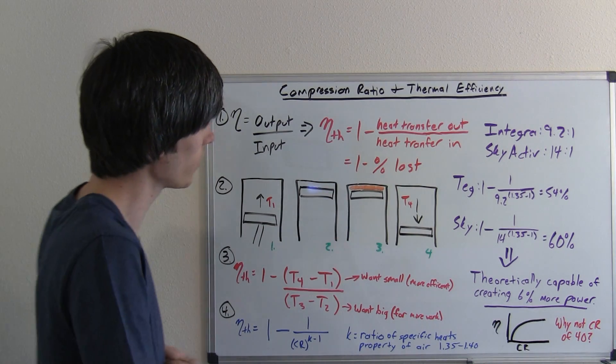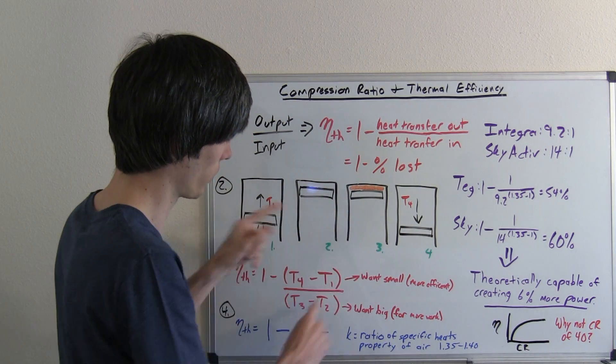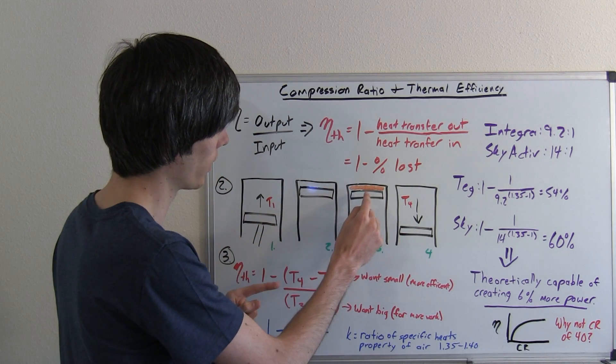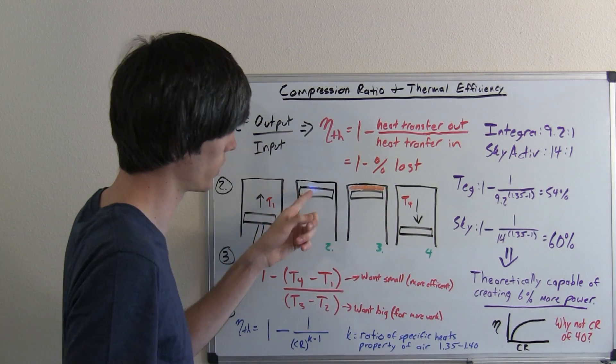Now the way that kind of makes sense is you've got your combustion. So T3 minus T2 is before combustion and after combustion. So T3 after combustion, T2 before combustion.